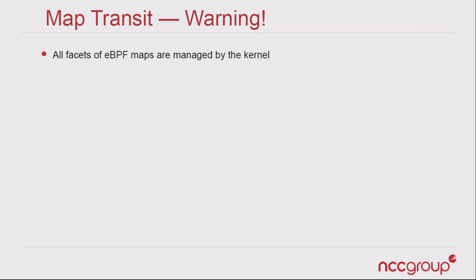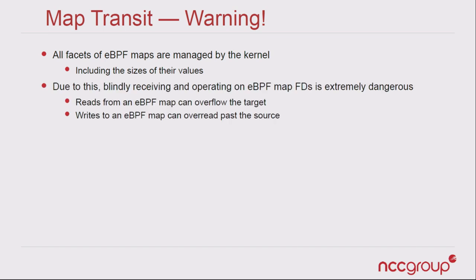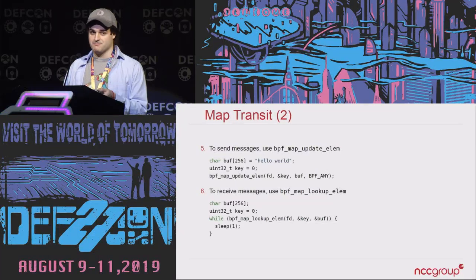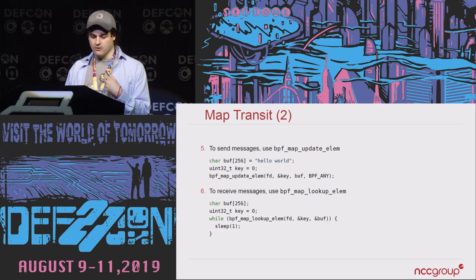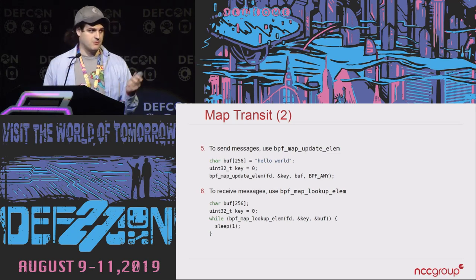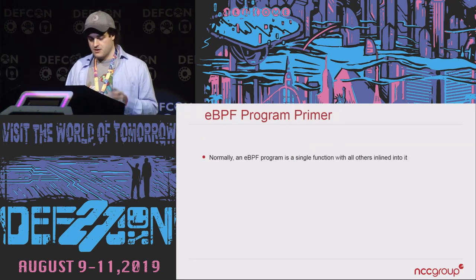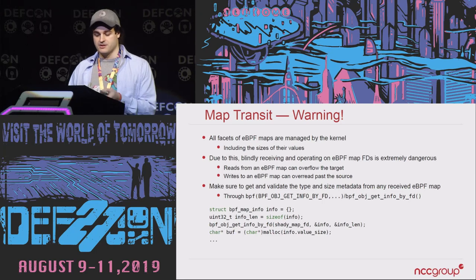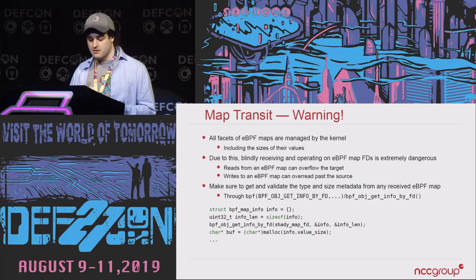Word of warning: all the things about these maps are managed by the kernel, including the sizes of their values. If you're blindly receiving file descriptors from untrusted processes, you're potentially going to run into problems. In the BPF map update elem call, we don't pass a size, but we've made sure the buffer is 256 bytes. The kernel knows the entry is 256 bytes and will read those 256 bytes from whatever pointer you give it. BPF is very reflective — you can query the kernel for metadata about programs including the size of things, so you can dynamically allocate the size you need.